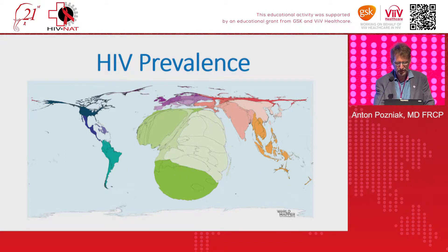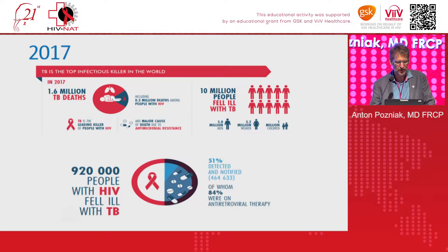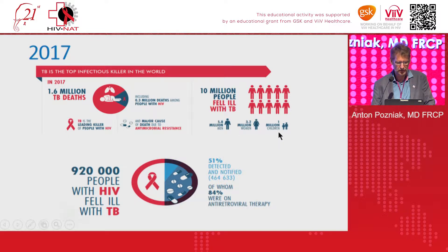The treatment of these two conditions is really important. In 2017, from WHO graphics, TB was the top infectious disease killer in the world — 1.6 million deaths. That's far too much for a disease that's preventable and curable. Ten million people developed TB, including 1 million children, and nearly a million people with HIV had TB.